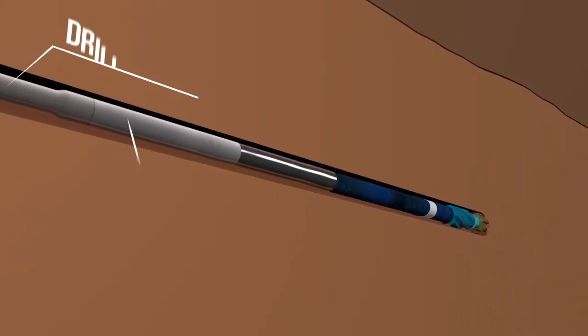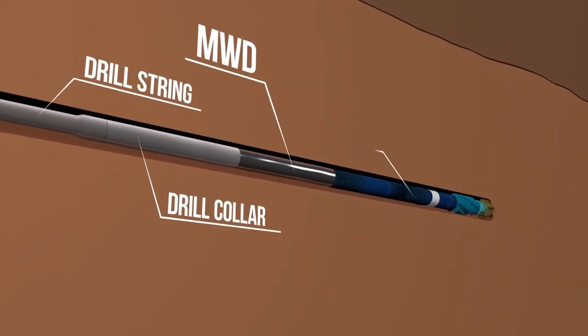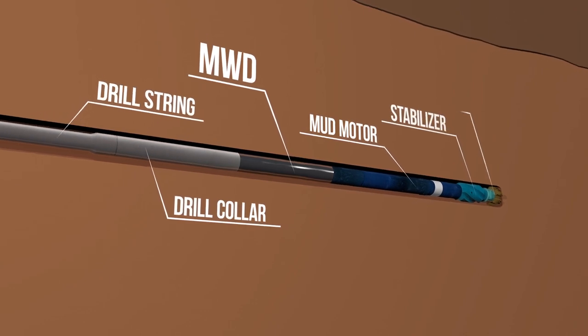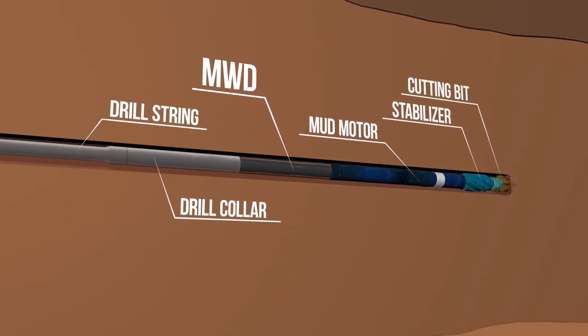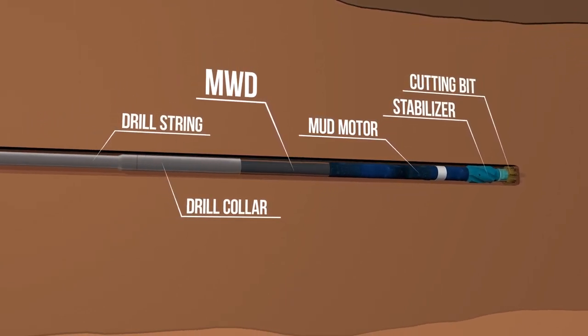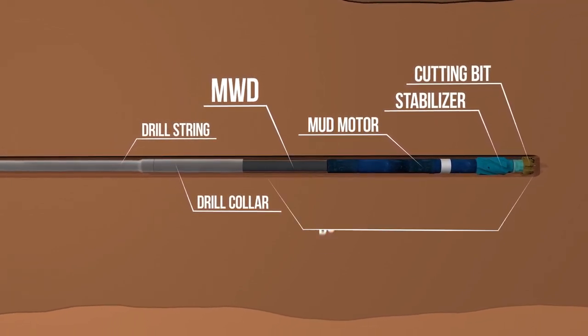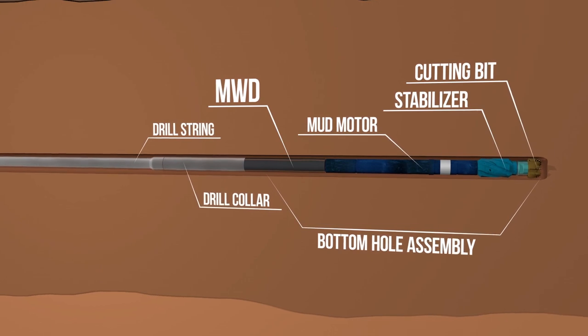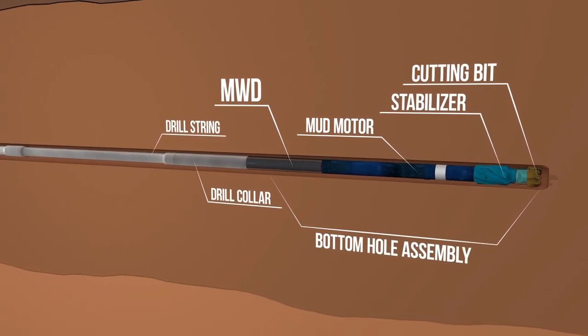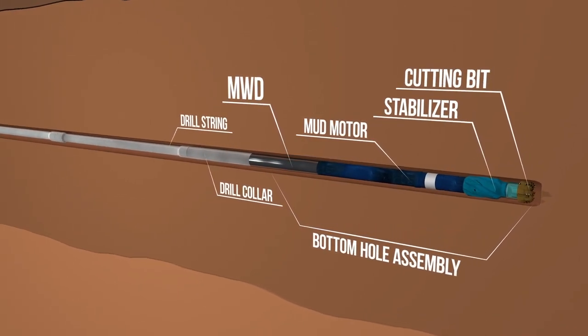The most common type of MWD is a magnetic tool. It relies on measurements of the Earth's magnetic and gravitational fields in order to determine the orientation of the bottom hole assembly, much like you would use a compass to determine your bearing.